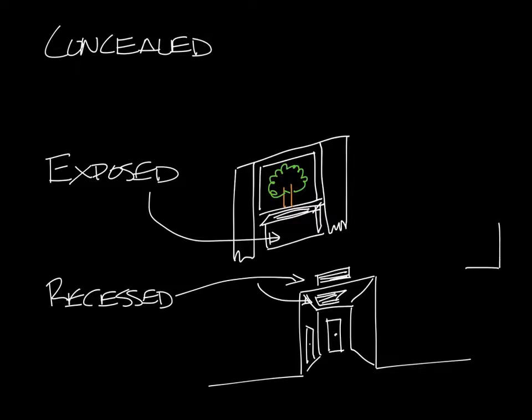So this white area would actually be the wall of your hotel room and then the purple would be the rest of the fan coil. So part of it is exposed in the space but most of it is recessed behind the wall.